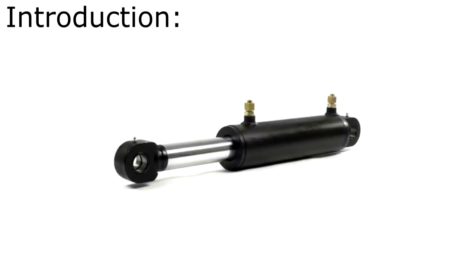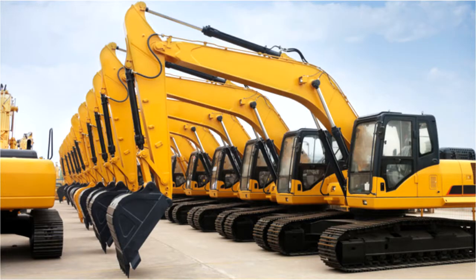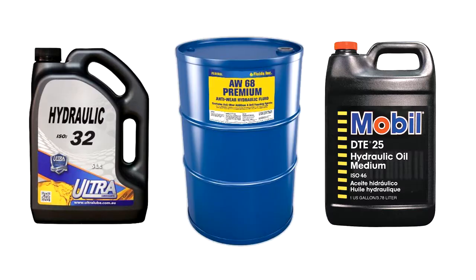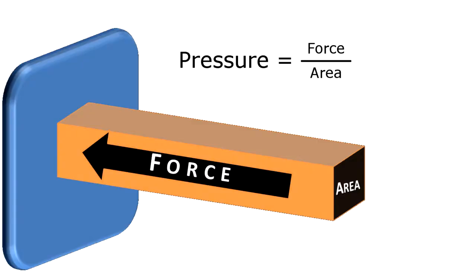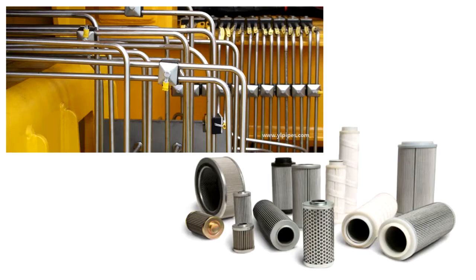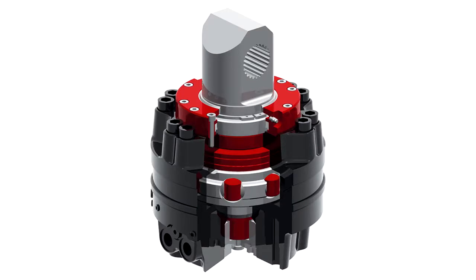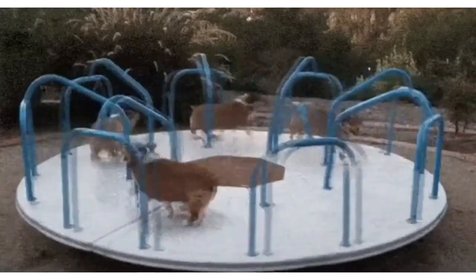Hydraulic systems are usually used in machines that have to put out a lot of force or heavy equipment. Hydraulic systems mostly use specialized oils to transfer force or pressure from a pump, through tubing and filters, to a hydraulic cylinder for linear motion or a hydraulic rotator for rotational motion.